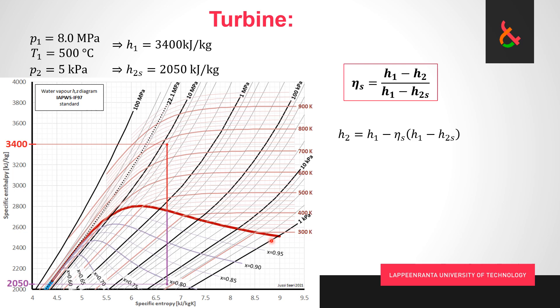That is our h_2s, and now we have all the variable values for this equation. We plug in the numbers, see what comes out: h_2 = 3400 - 0.85(3400 - 2050) = 2250 kilojoules per kilogram. As simple as that, and now we know the state of the steam exiting the turbine.